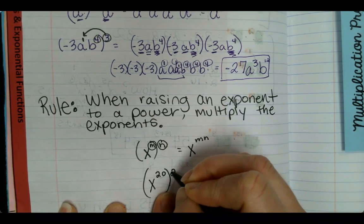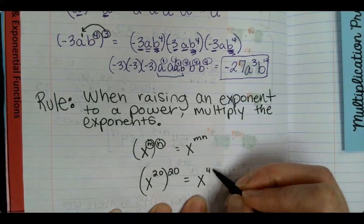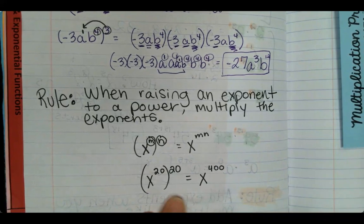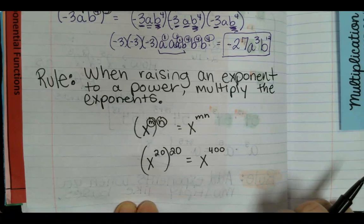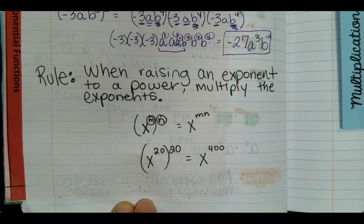No, you do x to the 400. You multiply those. You would just multiply them. What about x? x stays at x. Your base stays the same.